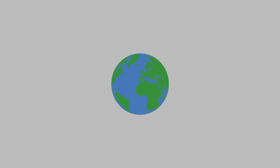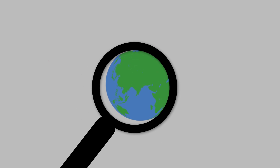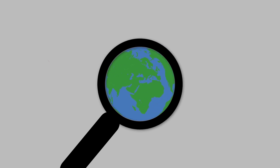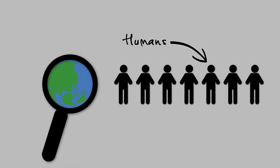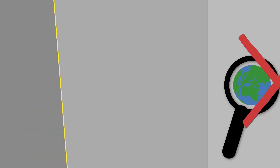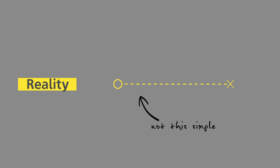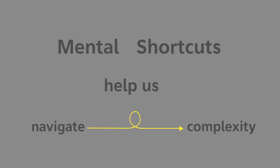Rational decision-making models are great — they give us useful ways of looking at the world. But they often fall short in the sense that humans don't actually use them. This is because reality isn't characterized by simple environments and limitless resources. This is why we use mental shortcuts instead — they help us navigate complex environments while we have limited resources.